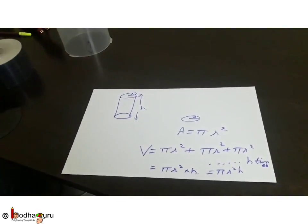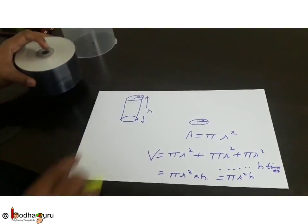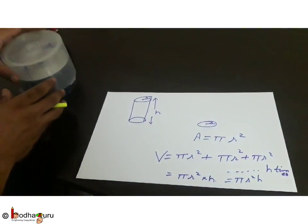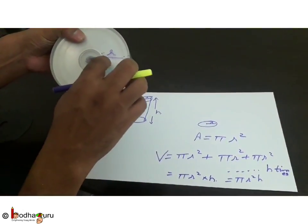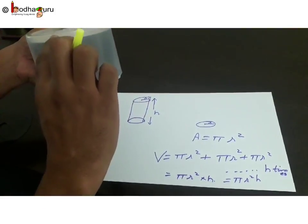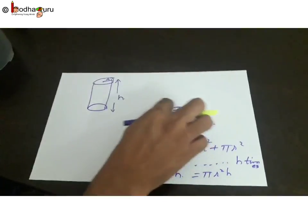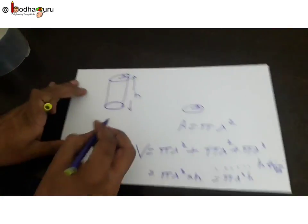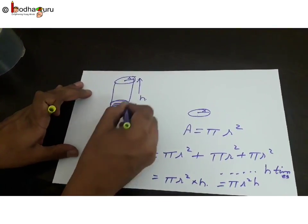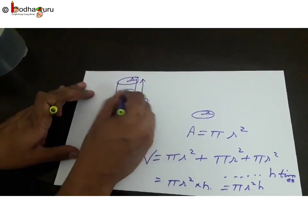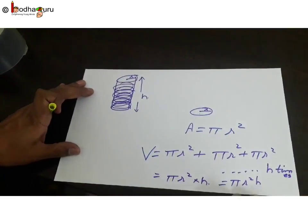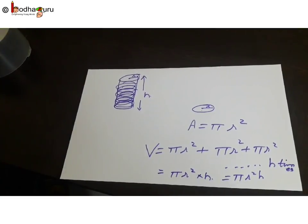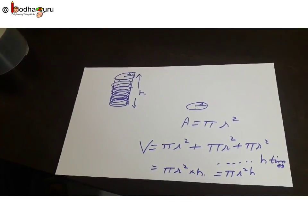So the volume of the cylinder is pi r squared h, where r is the radius of the circular face and h is the height of the cylinder. We computed it by finding the area of one circle — pi r squared — and since the cylinder is made up of DVD after DVD stacked one on top of each other, h times, that gives pi r squared h. So the volume of a cylinder is pi r squared h cubic units.